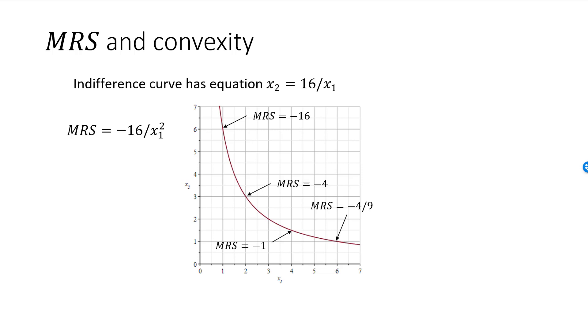With concave preferences, the consumer would be willing to give up a lot of a scarce good in order to get more of an abundant good. Although this is certainly possible, such preferences will not be classified as well behaved.